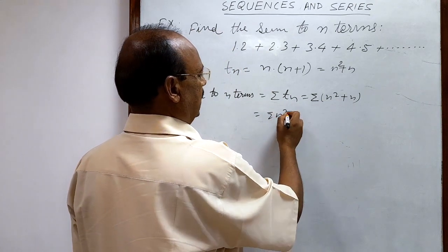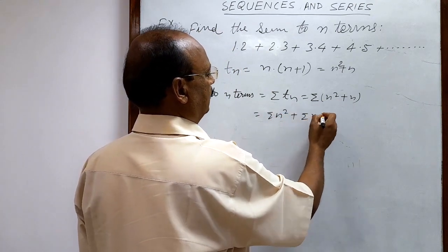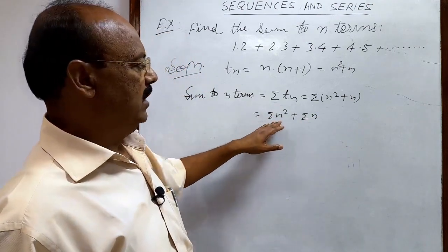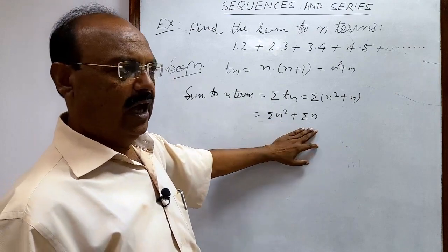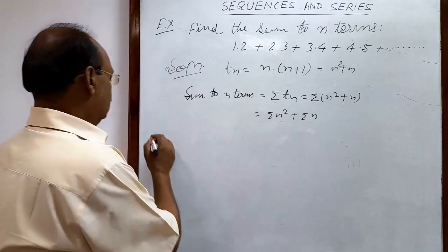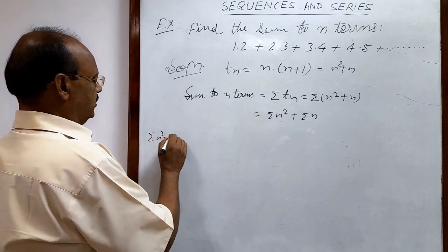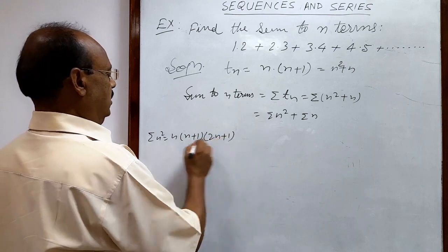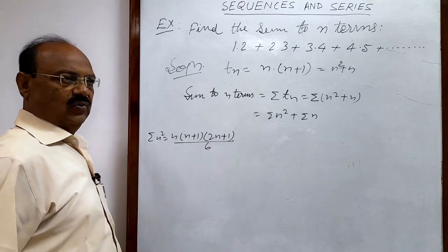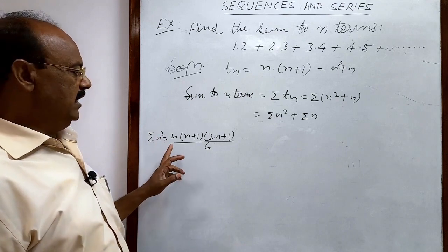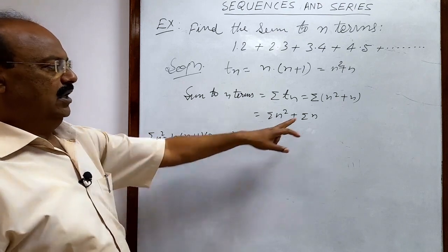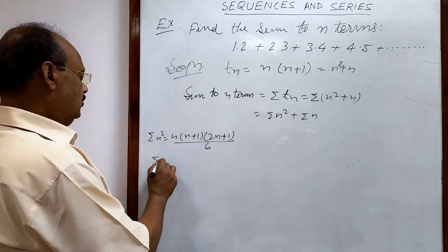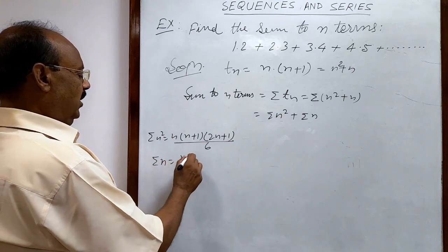This is sigma n² plus sigma n. In previous videos we discussed these formulas many times, so I'm expecting you remember these values. Sigma n² is n(n+1)(2n+1)/6, the sum of squares of first n natural numbers. And sigma n is the sum of first n natural numbers, which equals n(n+1)/2.